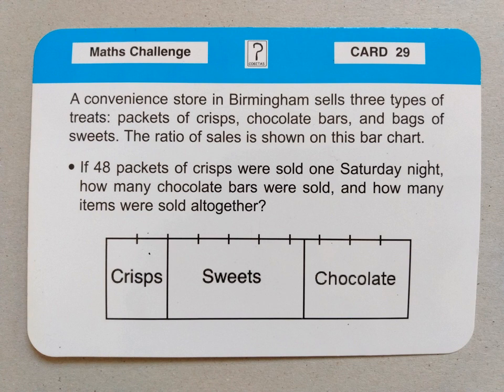So the bar chart at the bottom — if we have a look at it — it says crisps, sweets and chocolate, and then along the top of the bar are little measurement points, little increments, and they're really useful clues. They're a bit like a scale that you would have in a measuring jug or on a ruler. Now the fact that we know for sure is 48 packets of crisps were sold on this Saturday night, and if you have a look at the section of the bar that says crisps, we can see it has two of the measurement points above it — two little spaces between those black lines — and it represents 48.